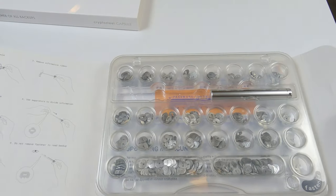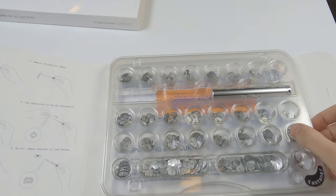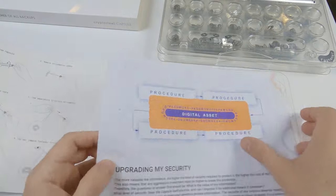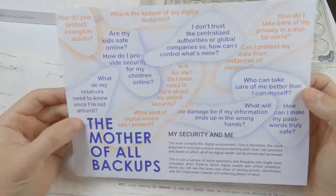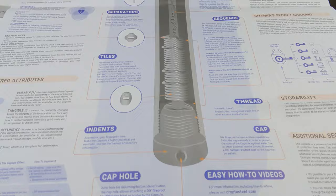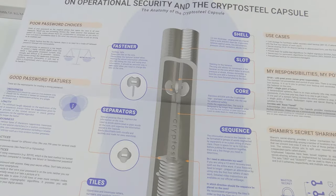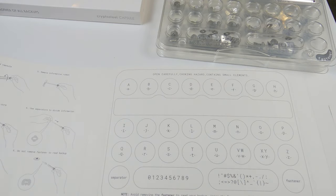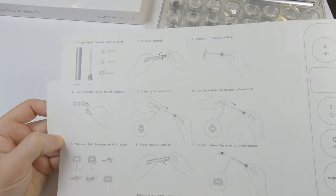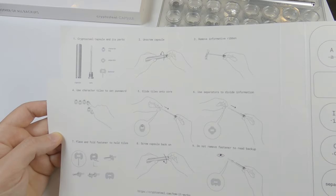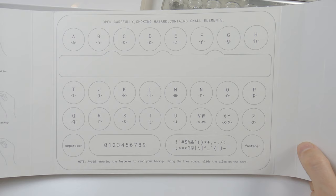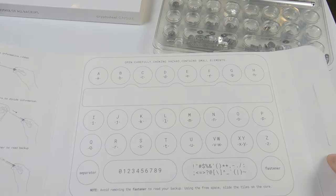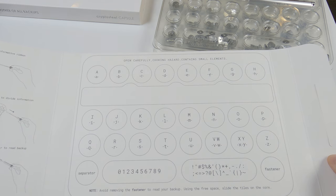You see cells with tiles and the capsule. Here is the instruction. You see the scheme and various recommendations. But this instruction is even more schematic. Looks easy. This page shows the contents, tiles with letters, numbers and symbols, separators to delineate words and fasteners. You will see how it all works in a moment.